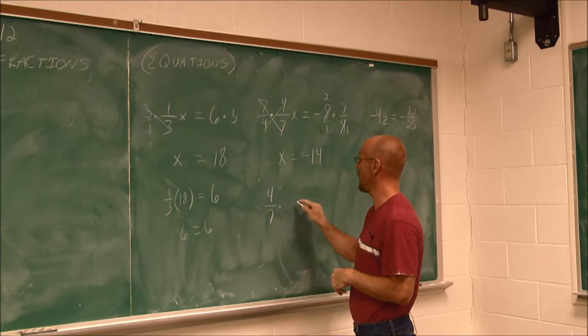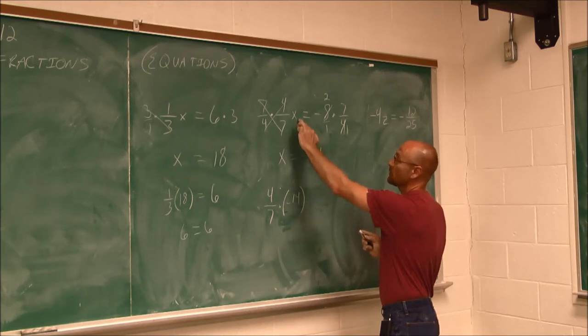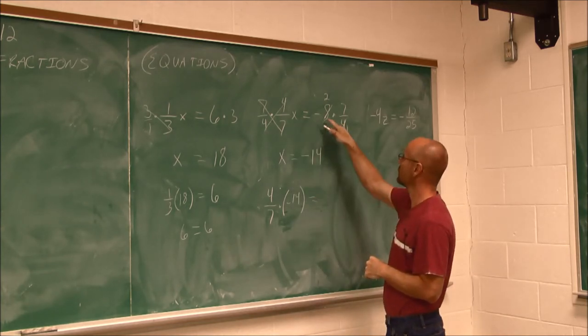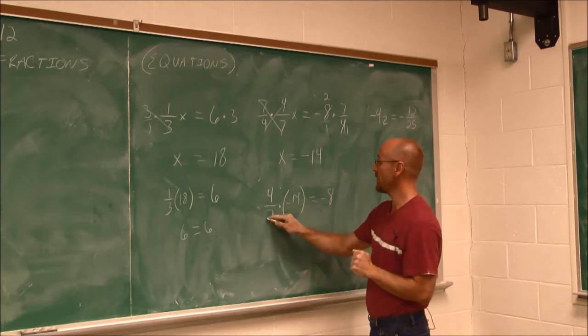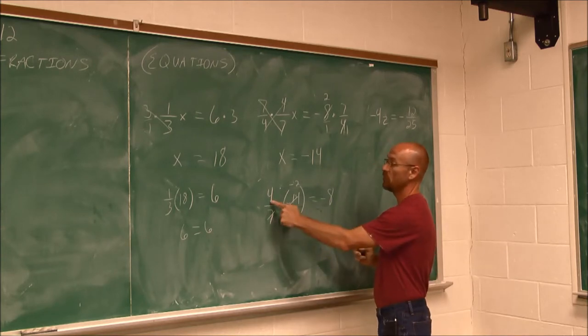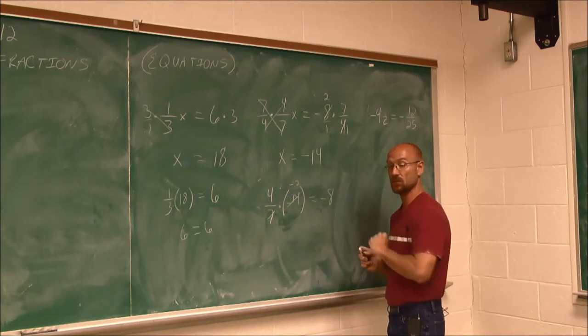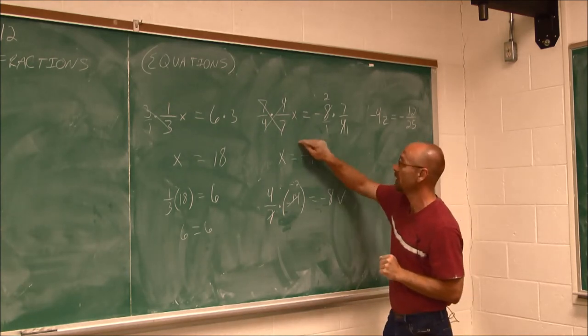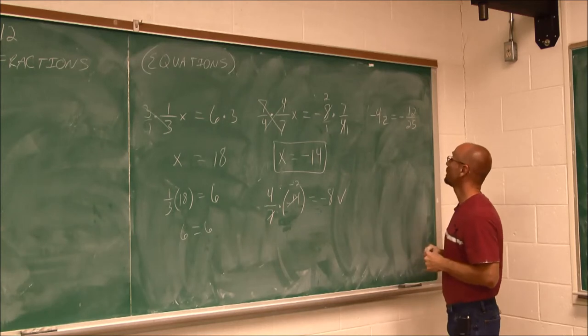And now I can check my work. 4/7 times negative 14, that's my x value, so I put in this for the x, equals negative 8. This was the original problem, now I'm evaluating it. 7 goes into negative 14, negative 2. 4 times negative 2 is negative 8. That's a true statement. I checked my work. I know that this is the answer.